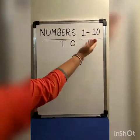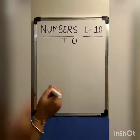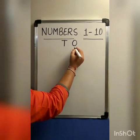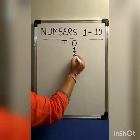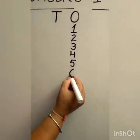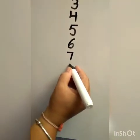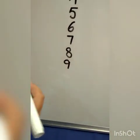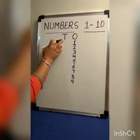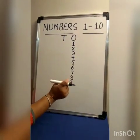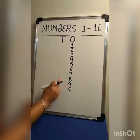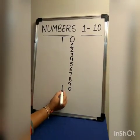So quickly we will revise the numbers 1 to 10. Let us start. Single digit numbers are always written under the ones place. 1, 2, 3, 4, 5, 6, 7, 8, 9. And when we write 10, we will use the tens place. We will write 0 under the ones and 1 under the tens. 1, 0 — 10.